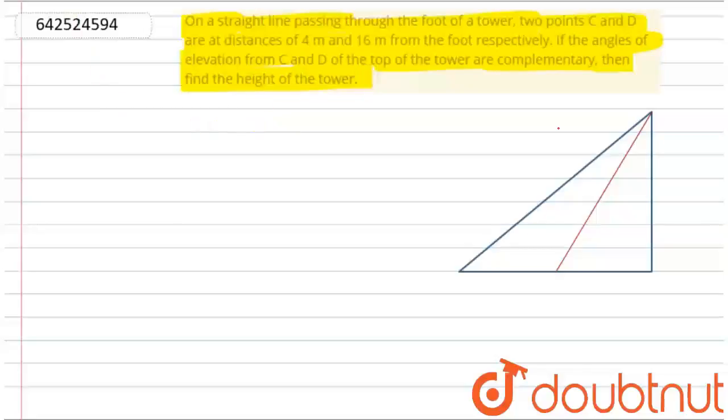So that's the question. As you can see in this figure, these are the two points. This is the foot of the tower, which is B, and A is the top, so this is the tower. From the foot of the tower, let's say C and D are the two respective points.